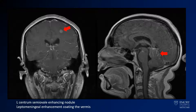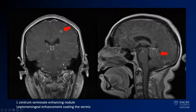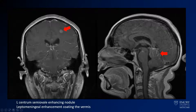Coming up higher, you start to see the abnormalities in the upper cerebral hemisphere — there is an enhancing nodule there. And then looking at the posterior fossa, this is a classic appearance of leptomeningeal disease. You have this hazy enhancement that follows the sulci, seen nicely in the interpeduncular cistern and in the folia overlying the superior aspect of the cerebellum.